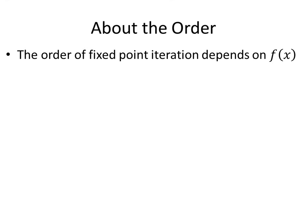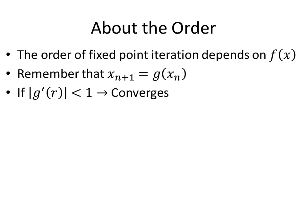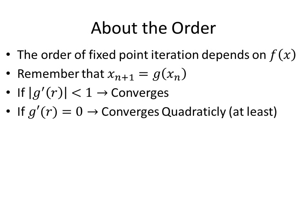Now, about the order of fixed point iteration, it really does depend on the function you start with. Remember that we said x_{n+1} equals g(x_n), and how that if g' at the root is less than 1, we said it will converge. If g' at the root is exactly equal to 0, however, the function converges quadratically, at least.